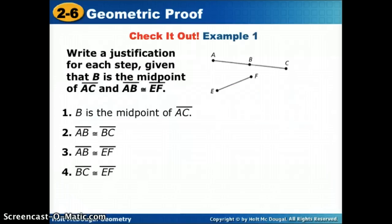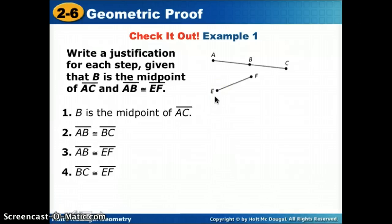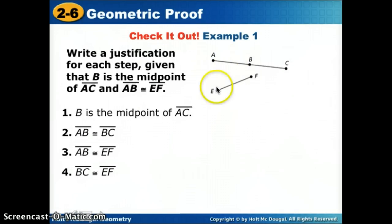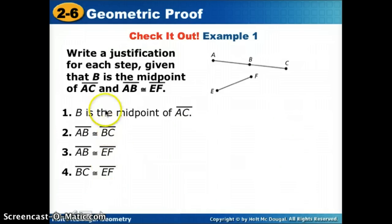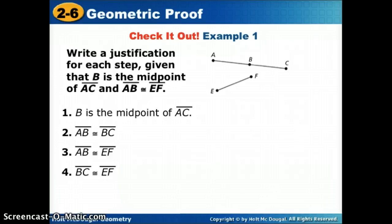Here's an example where we're given all the statements and need to come up with the justifications for each step. Given that B is the midpoint of AC, and AB is congruent to EF, let's find the justifications for all four steps. The first statement — B is the midpoint of AC — was given to us, so the justification is 'given.'